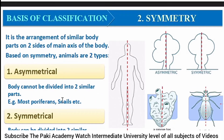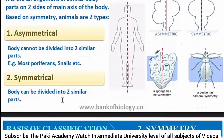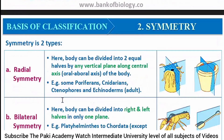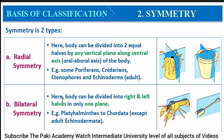Symmetry is the arrangement of similar body parts. If we divide the body into equal parts, it is symmetrical; if not, it is asymmetrical. The body that cannot be divided into two similar halves is called asymmetrical — mostly Poriferans and snails are examples. In symmetrical bodies, there are two types: radial symmetry, in which the body is divided into two equal halves by any vertical plane along the central axis, as seen in Poriferans and Cnidarians.